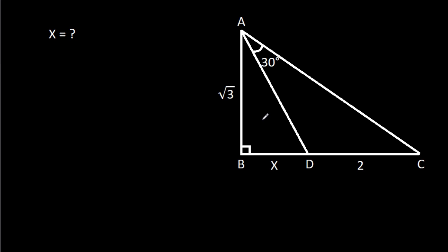In this video, we have been given a right angle triangle ABC, and angle CAD is 30 degrees. AB is root 3, CD is 2, and BD is x. We have to find x.